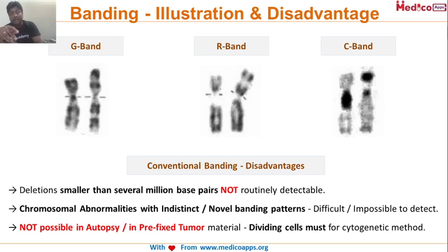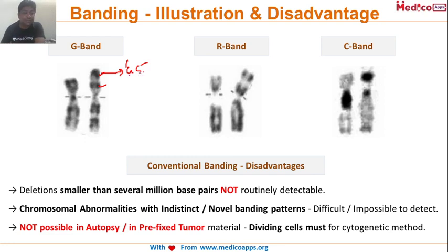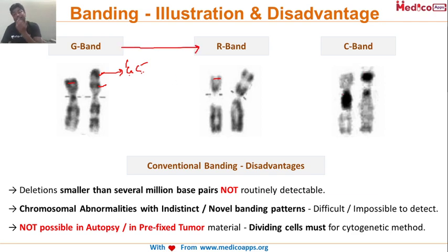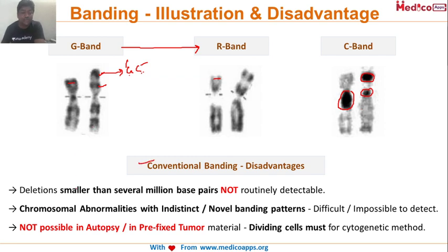If we look at how banding actually appears: in G banding you can see alternating dark and light segments, where dark corresponds to GC-rich segments. In R banding, the same chromosome shows a reversed pattern — what was dark is now light. In C banding, because the chromosome is treated with a different chemical, only the centromere and actively transcribing sites are stained dark.